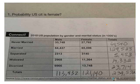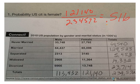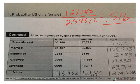Looking at number one, the probability that a U.S. citizen is female. We have 121,140 females over the total 234,572 for an answer of .516. I went to three decimal places on all of these because they don't come out nicely at all, so three decimal places is a good place to go.